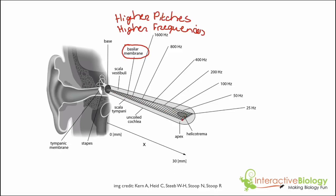Depending on the frequency, it's going to cause a different section of the basilar membrane to vibrate. Is it easier to move a thinner piece of membrane or a thicker piece of membrane? The answer should be quite obvious — it's much easier to move a thinner piece. So in order for it to vibrate down here, we need more force.